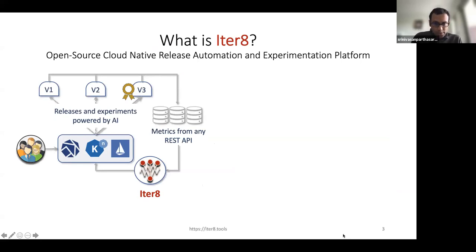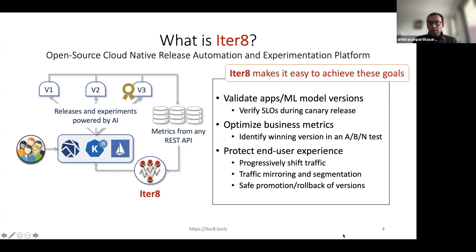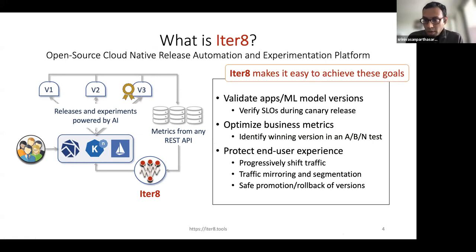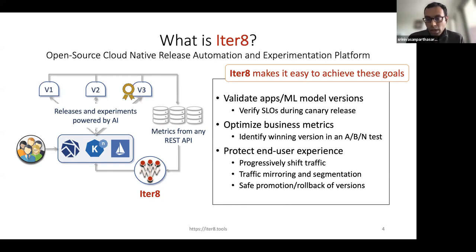So what is ITERATE? ITERATE is an open source platform for cloud-native release automation and experimentation. As developers of Kubernetes apps or machine learning models, we often have a number of goals. Maybe we want to do a canary test — we want to validate our canary release, verify the canary version is satisfying service level objectives. Or maybe we're doing an A/B test or an ABN experiment, and we want to identify the best version. We have a number of versions of our application and want to compare them — maybe pick the one that maximizes the business objective of interest, maximizes user engagement, maximizes revenue, minimizes cost. Pick the best version.